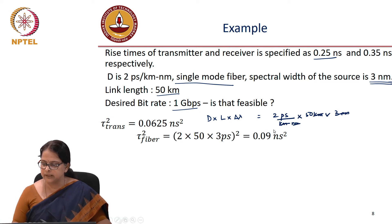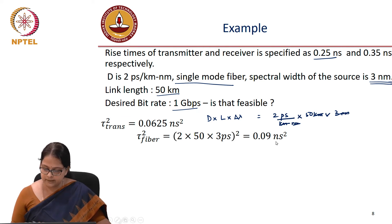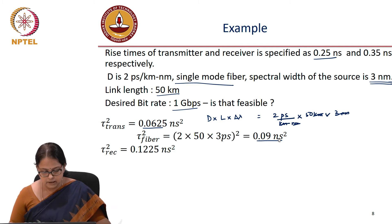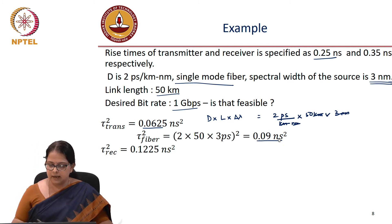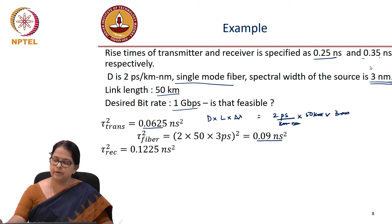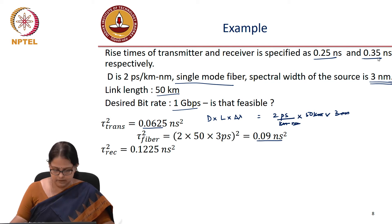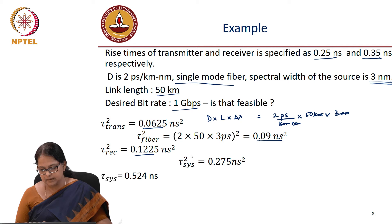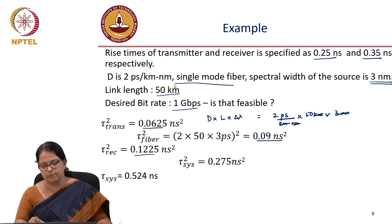The fiber rise time is 2 × 50 × 3 = 300 ps, so τ_fiber² = 0.09 ns². The receiver rise time is 0.35 ns, so τ_receiver² = 0.1225 ns². Summing the squares: τ_system = √(0.25² + 0.09 + 0.1225) ≈ 0.524 ns. The question is whether this system rise time of 0.524 ns can support 1 Gbps, depending on whether we are using RZ or NRZ signaling.